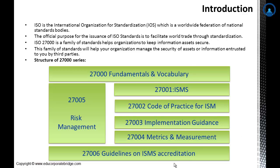Looking at the structure of the 27000 series, you can find: 27000 covers fundamentals and vocabulary; 27001 is the Information Security Management System; 27002 is a code of practices for information security management; 27003 is implementation guidance; 27004 is metrics and measurement; 27005 covers risk management; and 27006 provides guidelines on ISMS accreditation.